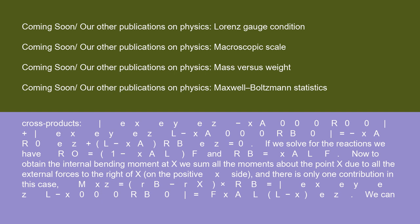If we solve for the reactions we have RO = (1 - xA/L)·F and RB = (xA/L)·F. Now to obtain the internal bending moment at x, we sum all the moments about the point x due to all the external forces to the right of x on the positive x side, and there is only one contribution in this case: